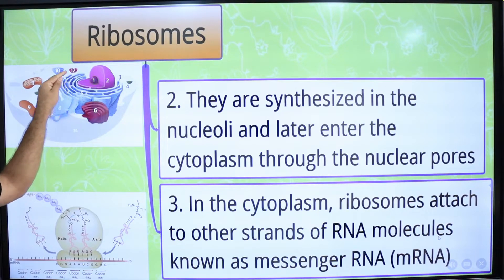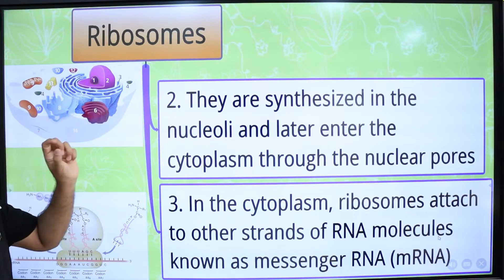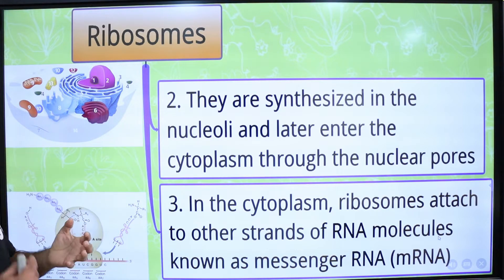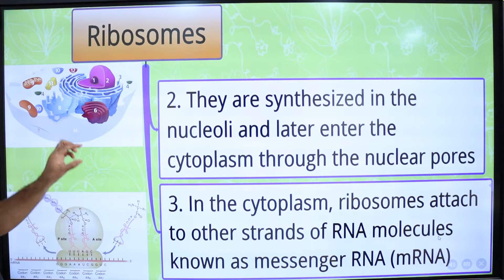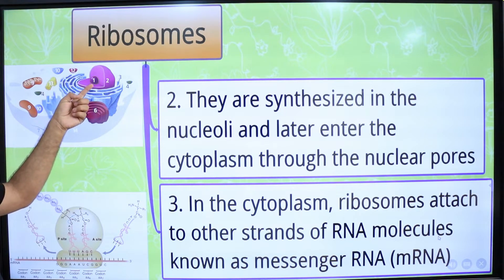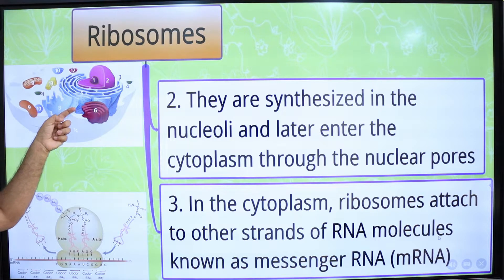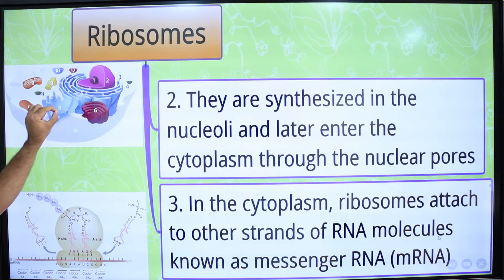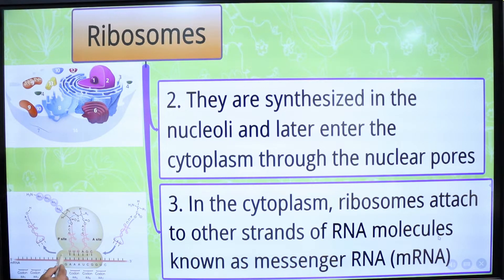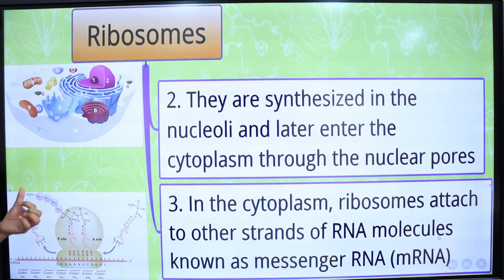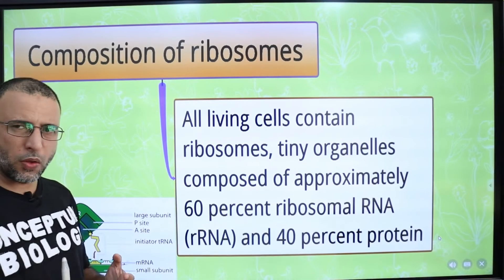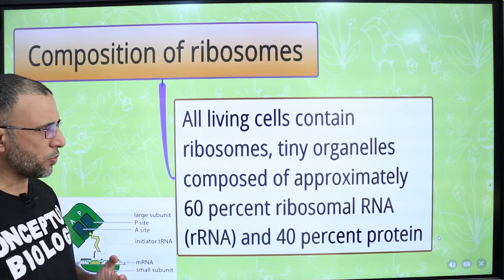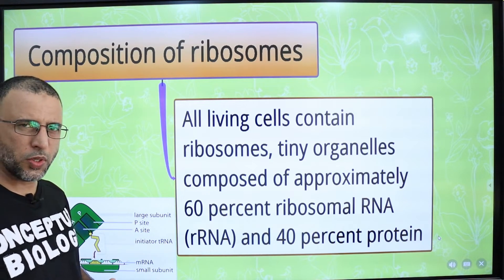Ribosomes are synthesized inside the nucleus in the nucleolus, where the smaller and larger subunits are assembled. They are then transferred from the nucleus to the cytoplasm through nuclear pores. In the cytoplasm, ribosomes attach to an mRNA molecule, read the genetic information present in codons, and translate that information into a polypeptide chain. All living cells contain ribosomes, which is why they are considered universal structures.